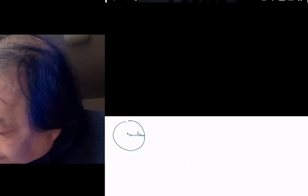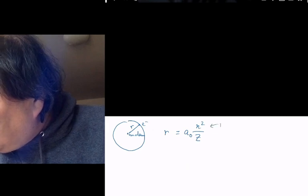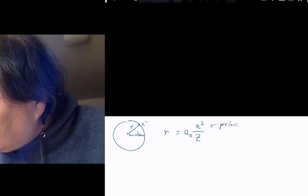Here's the nucleus, here's the electron, it's a distance r from the nucleus and r equals a zero n squared over z where n is the principal quantum number.